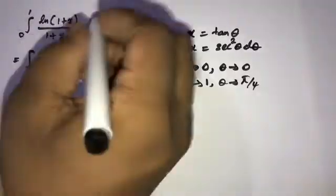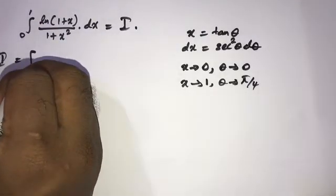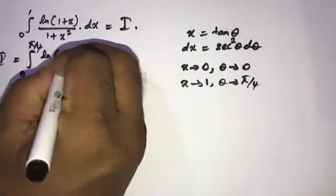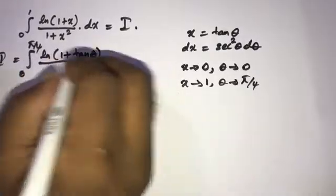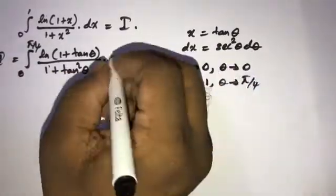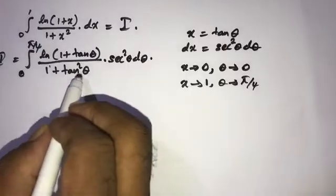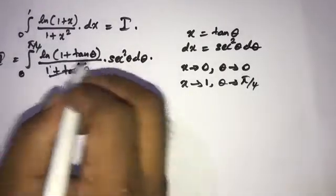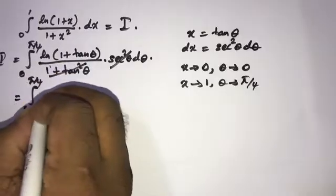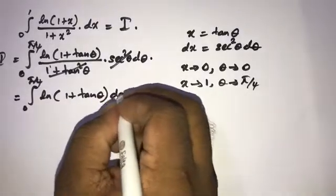Okay, now plug in. Let's call this integral I. So I is equal to the integral from zero to π/4 of natural log of (1 + tan(θ)) over (1 + tan²(θ)) times sec²(θ) dθ. We know that 1 + tan²(θ) equals sec²(θ), so these terms cancel, and we can write I equals the integral from zero to π/4 of natural log of (1 + tan(θ)) dθ.